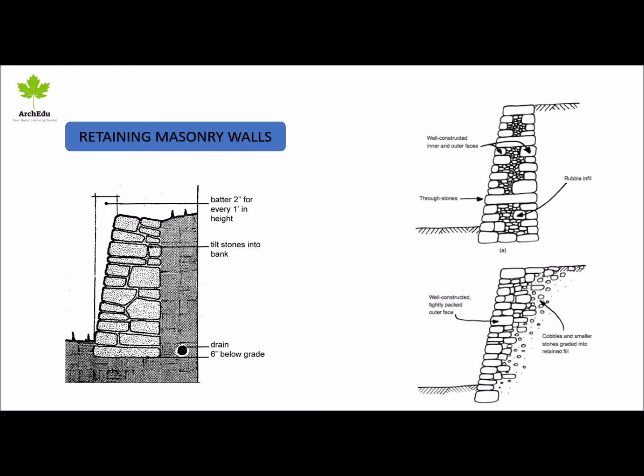Retaining masonry walls: retaining walls are relatively rigid walls used for supporting soil laterally so that it can be retained at different levels on the two sides. They are structures designed to restrain soil to a slope that it would not naturally keep. A retaining wall that retains soil on the backside and water on the front side is called a seawall or a bulkhead.